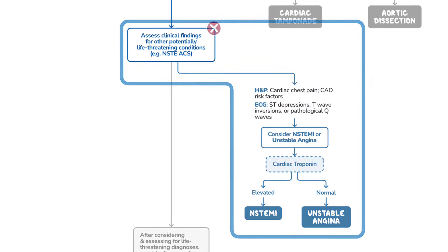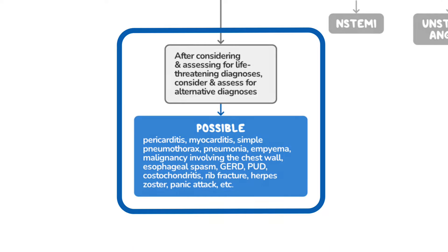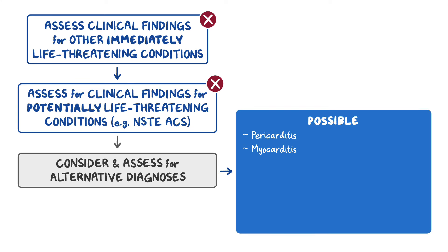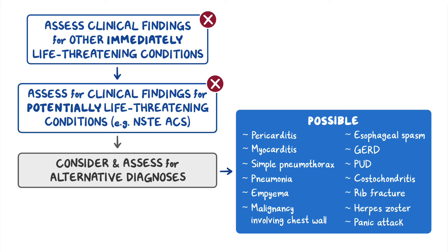Only after considering the life-threatening conditions should you evaluate the patient for the less dangerous alternative diagnoses for chest pain. Be sure to consider cardiac etiologies like pericarditis and myocarditis. Other causes include simple pneumothorax, pneumonia, empyema, and malignancy involving the chest wall. Esophageal spasm, gastroesophageal reflux disorder or GERD, and peptic ulcer disease or PUD are examples of other gastrointestinal pathologies that can manifest as chest pain. Other common causes include costochondritis, rib fracture, herpes zoster, and panic attack. You should methodically approach these diagnoses by having elements of your history and physical examination guide your diagnostic considerations and workup.